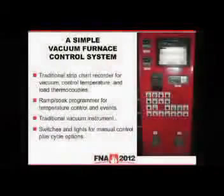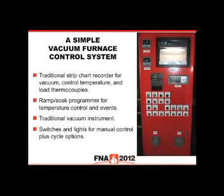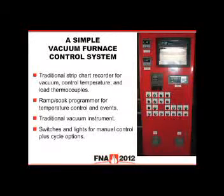This system here is what we would call a traditional basic vacuum furnace control system. These are disappearing and becoming hard to buy — a conventional paper strip chart recorder would record temperature, a load thermocouple or two, maybe five or six load thermocouples, and it would record vacuum level. We would have a conventional ramp-soak programmer to bring the furnace up in temperature at a certain ramp rate, soak at various interim temperatures, bring up to final temperature, and activate a segment to start cooling. We'd have a conventional vacuum instrument, perhaps made by Varian, MKS, or Televac.